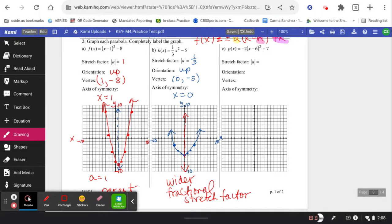Last one. Pause the video. Try it. All right. Did you see the negative orientation this time for that stretch factor of 2? I'm seeing a vertex of 6, 7, and an axis of symmetry is going to go straight through 6. 6, 7.